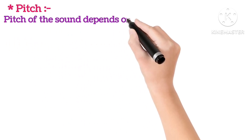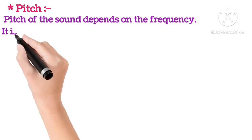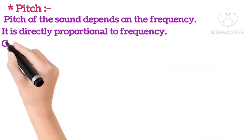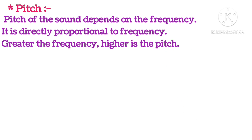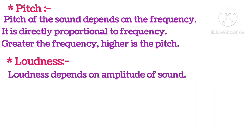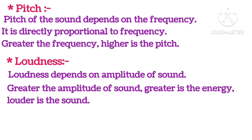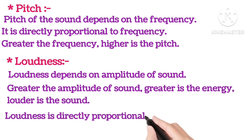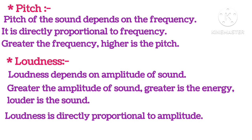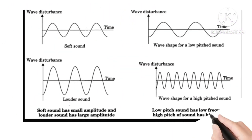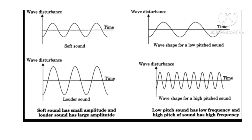Pitch: The pitch of sound depends on frequency and is directly proportional to it, so greater the frequency, higher will be the pitch. Loudness: Loudness depends on the amplitude of sound — greater the amplitude, greater is the energy and louder is the sound. Loudness is directly proportional to amplitude. Soft sound has small amplitude and louder sound has large amplitude. Low pitch sound has low frequency and high pitch sound has high frequency.